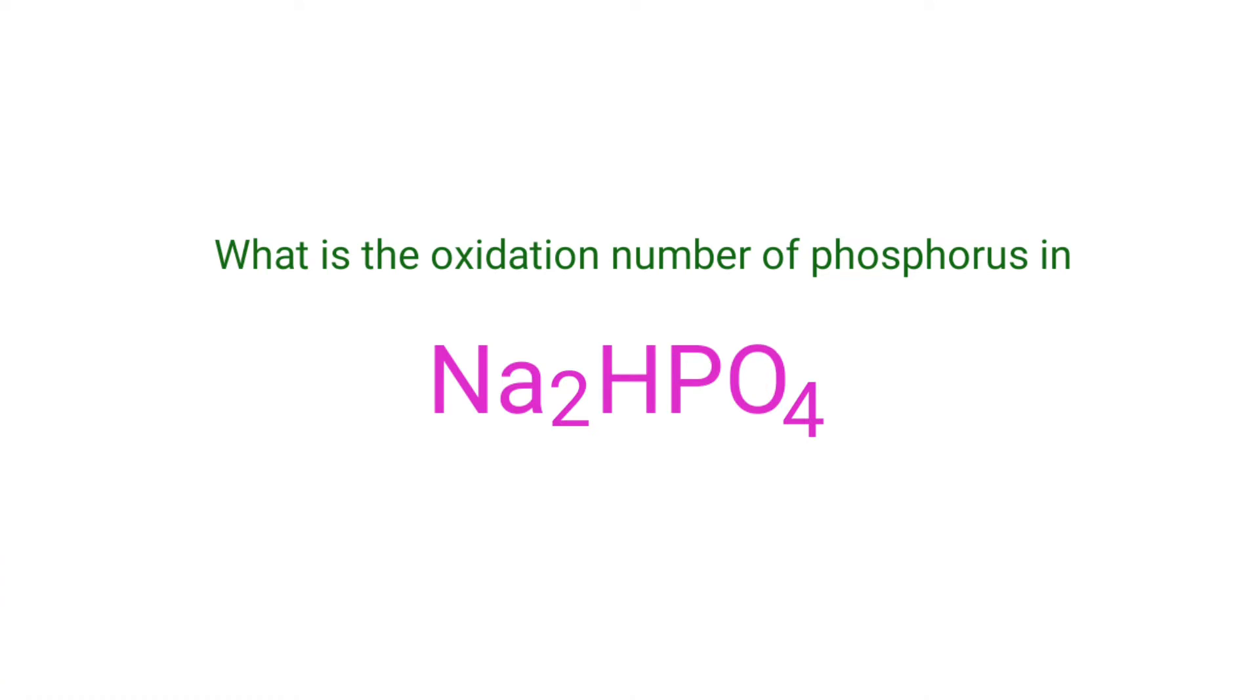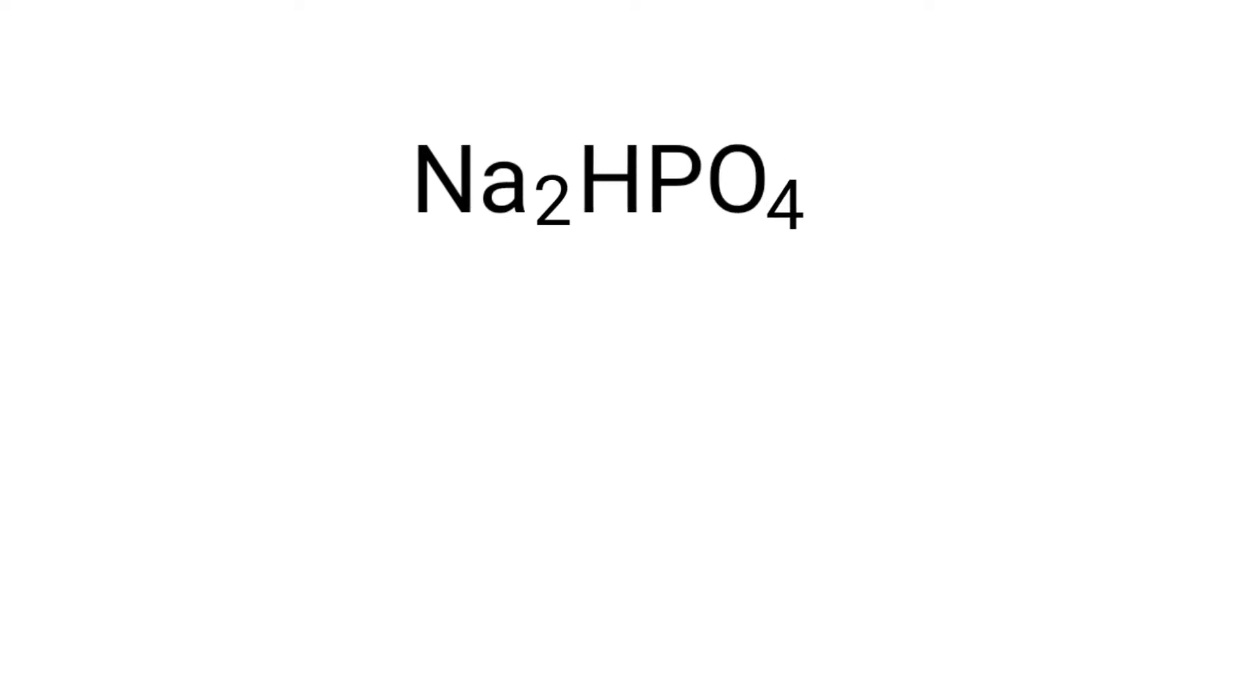What is the oxidation number of phosphorus in disodium phosphate? We can use the oxidation number rules to determine oxidation numbers. Disodium phosphate is a neutral compound with overall oxidation number zero.